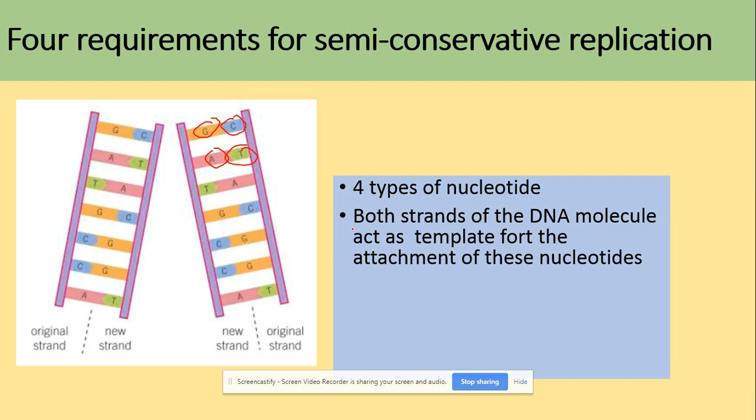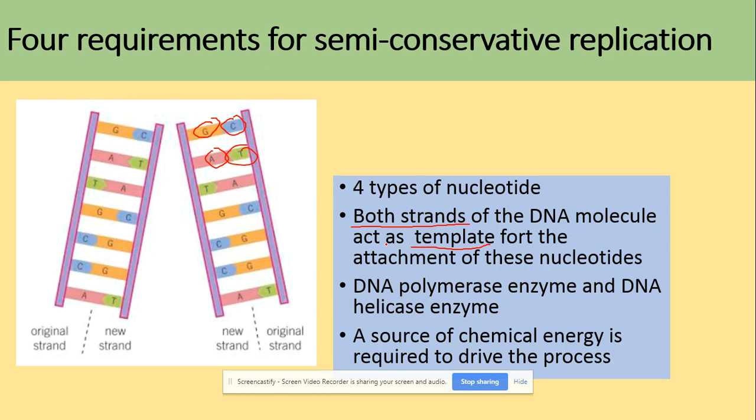Both strands—that's really important—both strands act as a template. Those strands are going to unwind and act as a template so the free nucleotides from the cytoplasm can attach. We need the DNA polymerase enzyme, which will make the phosphodiester bond, and DNA helicase, which will break the hydrogen bonds. We also need a source of chemical energy to drive the process.